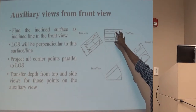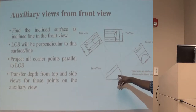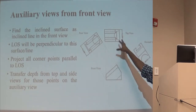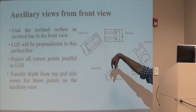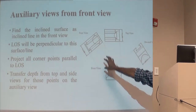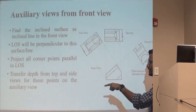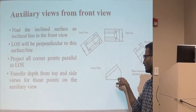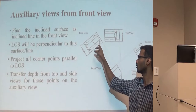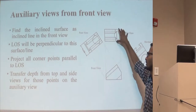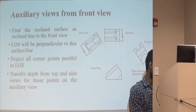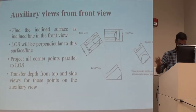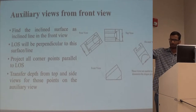Since this is an auxiliary view from the front view, I would have my depth transferred from the top or the side — whichever is given. In this case I have the top, so I would take my depth information from the top and use it in my auxiliary view. The steps are: select the inclined edge, draw a parallel line parallel to that inclined edge, and project each and every corner point from the front view perpendicular to that parallel line. Then use the depth information from the top view, project it into your auxiliary view, and complete the auxiliary view.